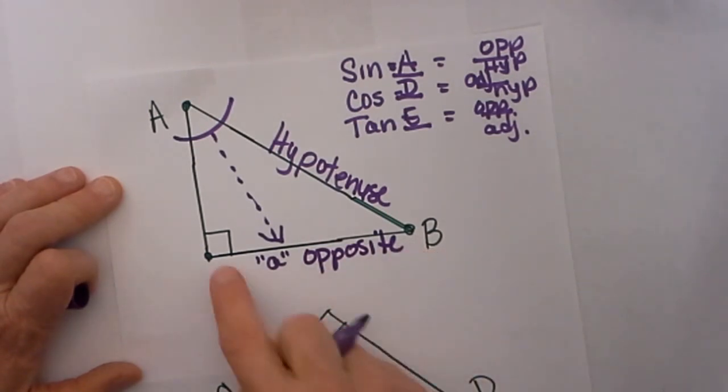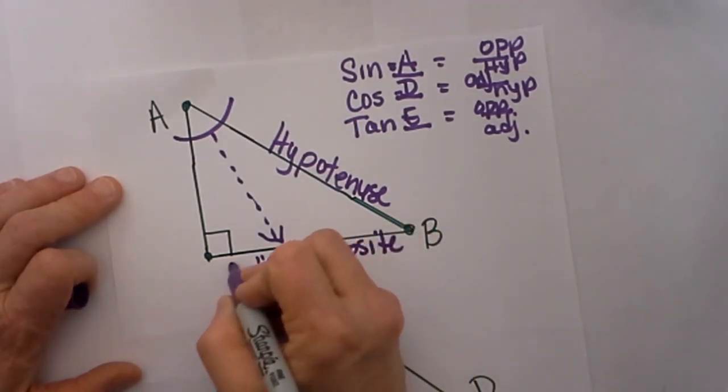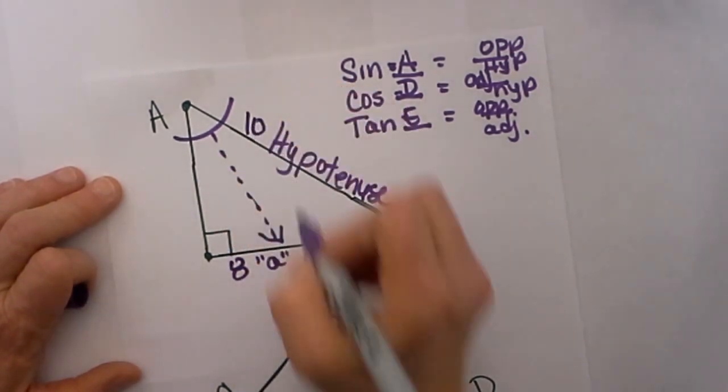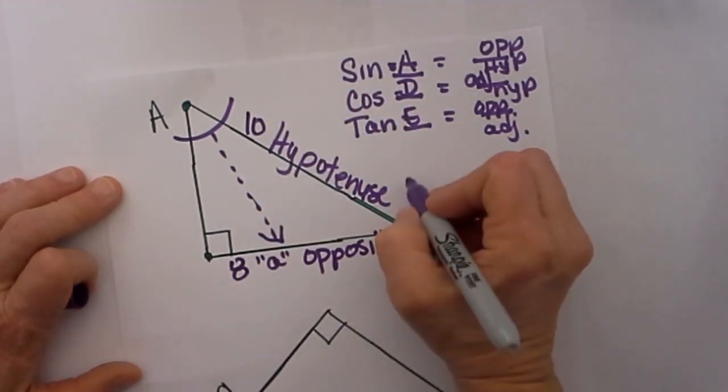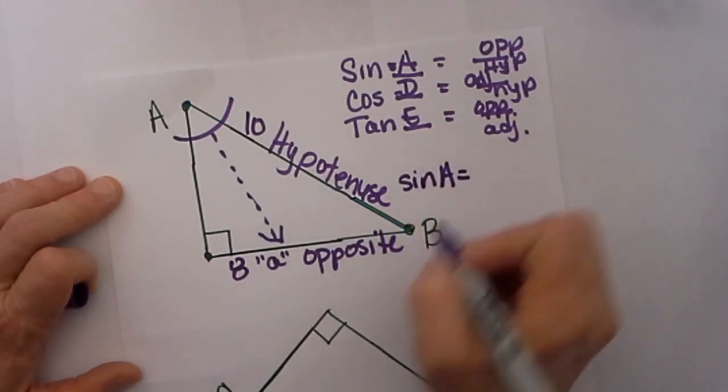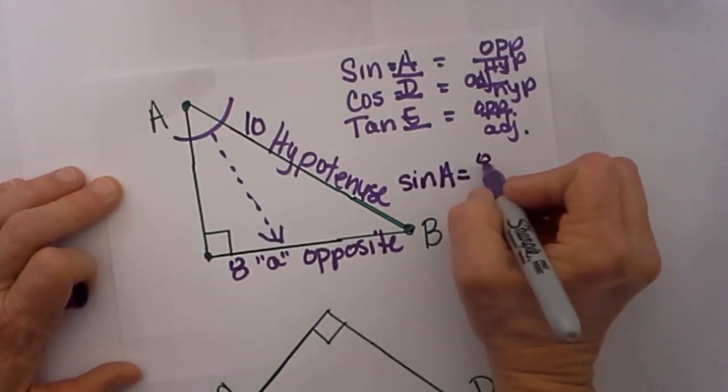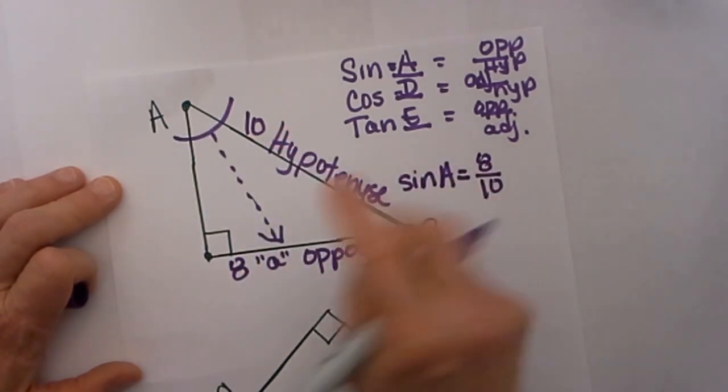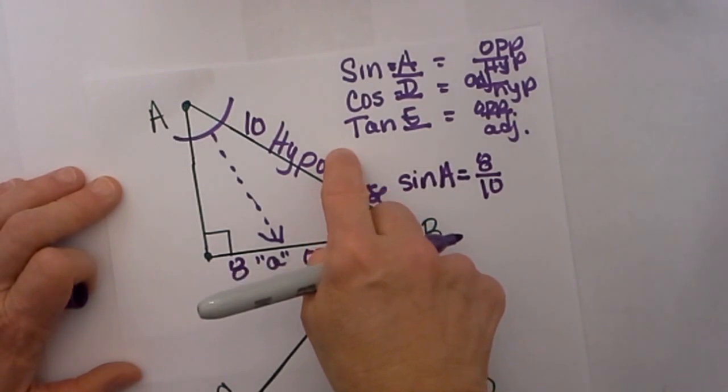So now let's give them lengths. Let's say that this opposite side is 8 and this hypotenuse is 10. I can now write this ratio as the sine of A is equal to 8 over 10. So my opposite over my hypotenuse.